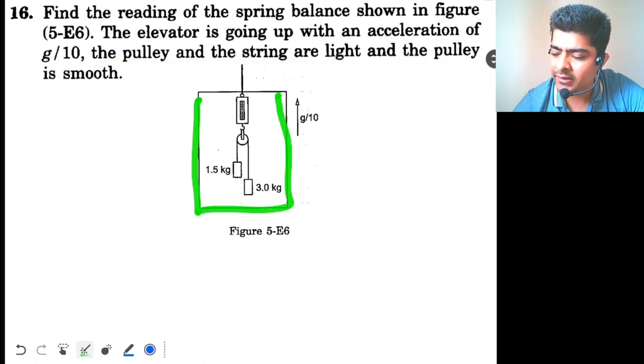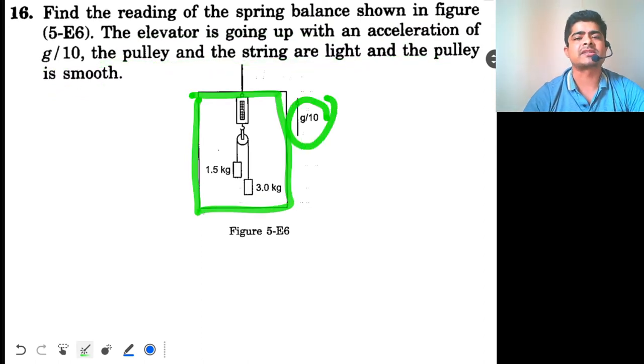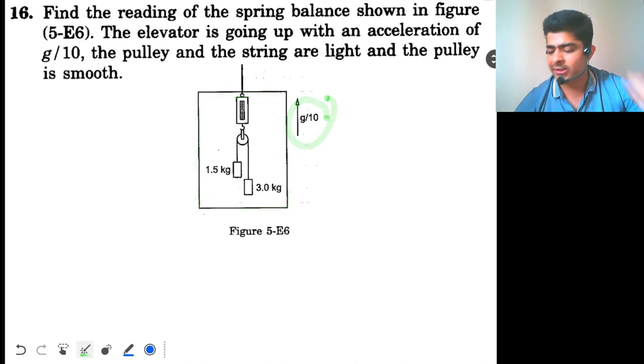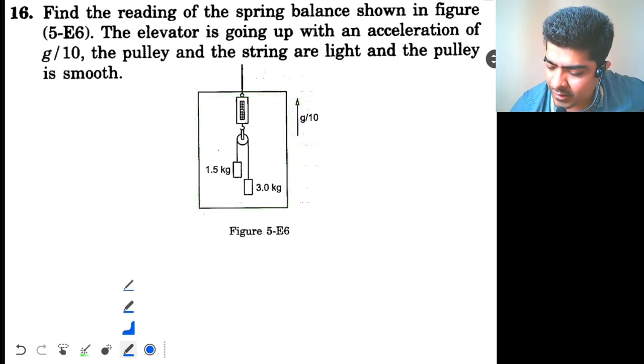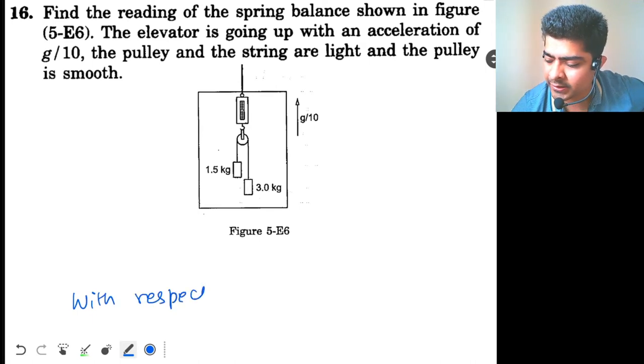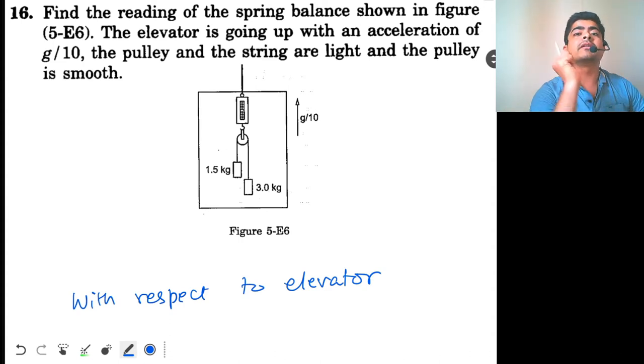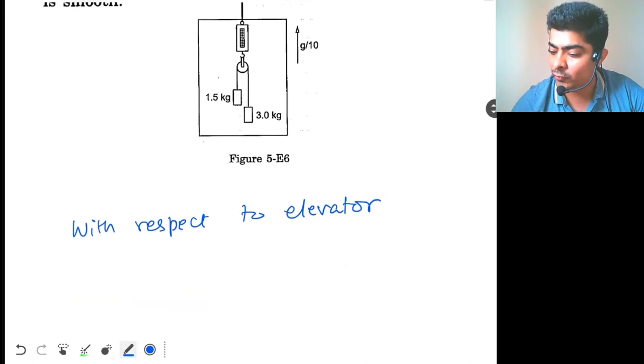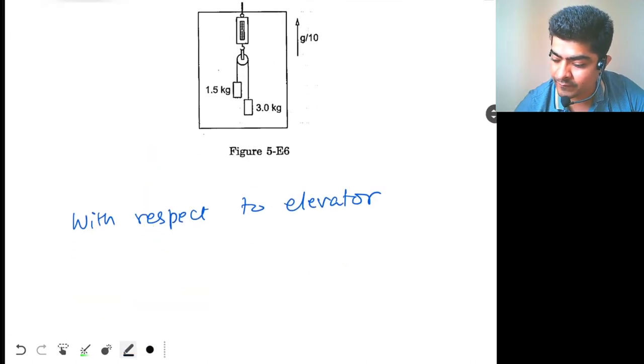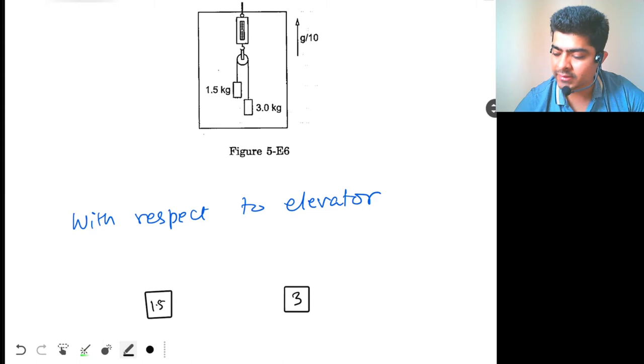So, this is your elevator. This is going up with g by 10 acceleration. With respect to elevator, that means we are seeing in the elevator frame. Because elevator is accelerating, it is a non-inertial frame. So we need to apply pseudo force. It is easy. So, this is your 1.5 kg. And this is 3 kg.